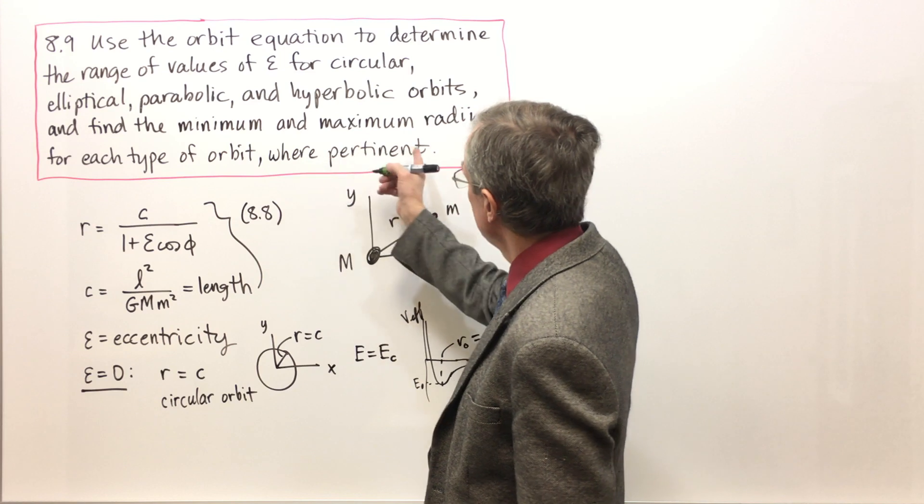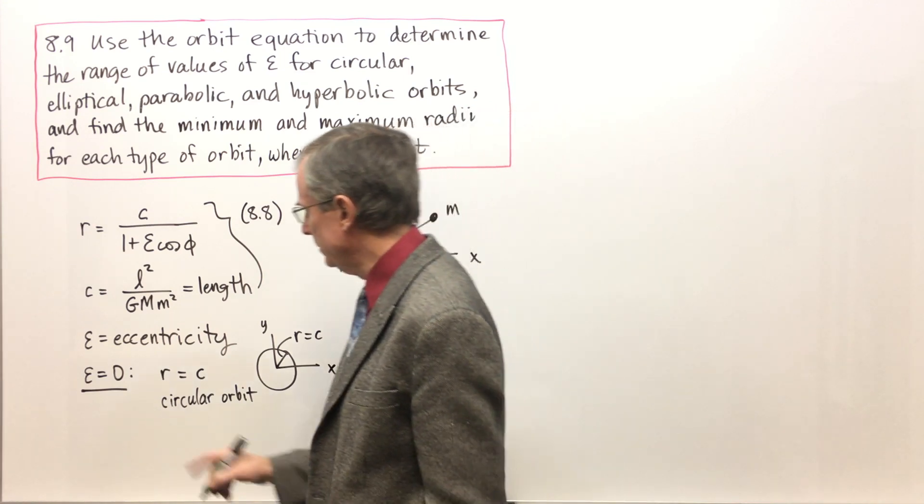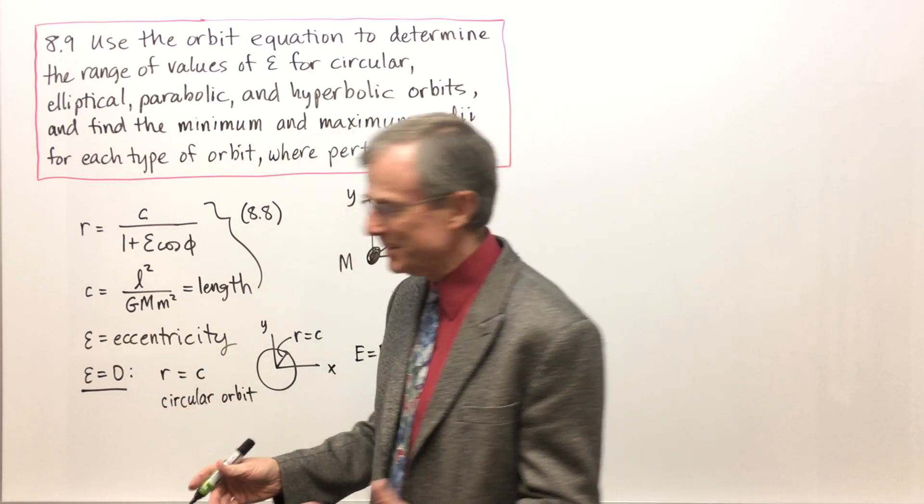What are the minimum and maximum radii? The radius is always equal to C.